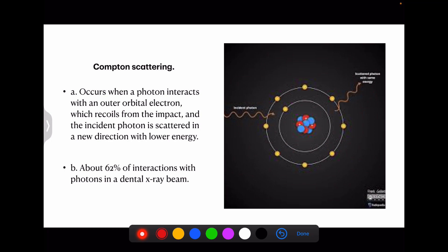The third part is the Compton scattering. In this, when a photon interacts with an outer orbital electron which recoils from the impact, the incident photon is scattered in a newer direction to lower the energy. That's here. And this generally accounts for 62%.